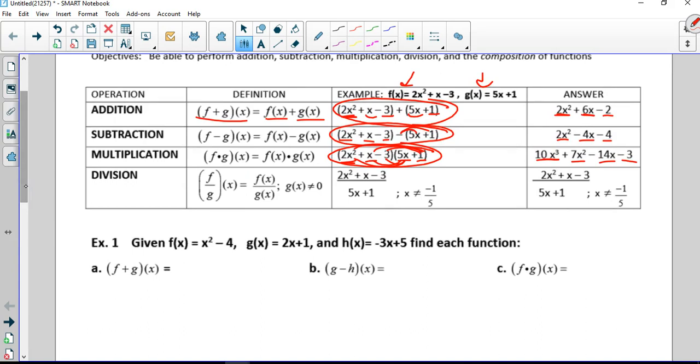And then with division, f over g of x is the same as f of x over g of x. We've got to remember that the denominator, g of x in this case, but in general the denominator cannot equal 0. When we look at this one, we have to set the denominator equal to 0 and solve it to find out what it cannot be. We solve for x and then say it can't be that.